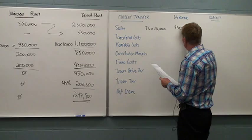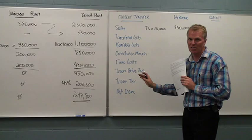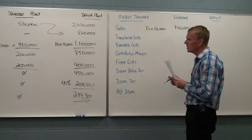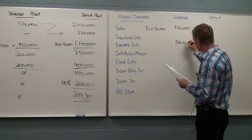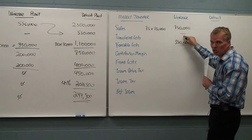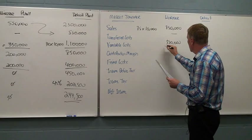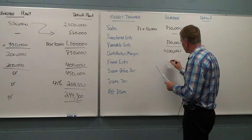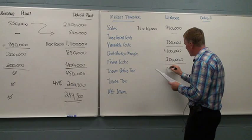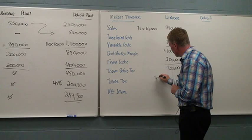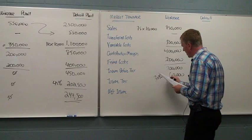Now the nice part about this is that we've actually done a lot of the calculations already. So this schedule can be done fairly quickly. Our variable costs would stay the same, $350,000. And remember, there'd be nothing here for transferred costs. That's only if you're having something transferred into you. For Windsor, they're transferring it out, not in. So therefore our contribution margin would be $400,000. Our fixed costs are $200,000. And our income before tax then is $200,000. Our tax rate is 30%. That will give us an income tax amount of $60,000. So therefore our net income is $140,000.